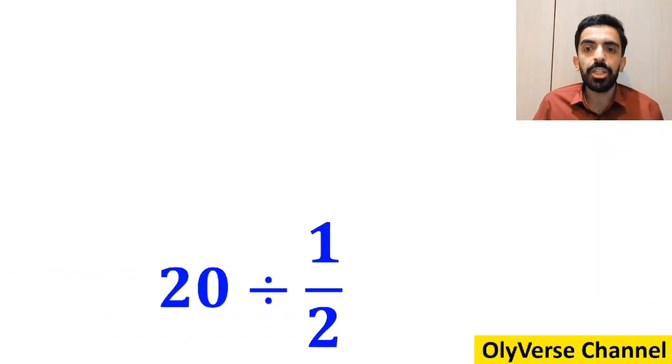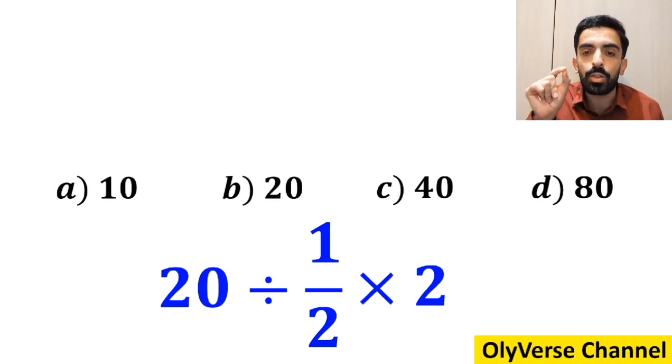What is the value of the expression 20 divided by 1 over 2 multiplied by 2? Which option do you think is the correct answer to this question?